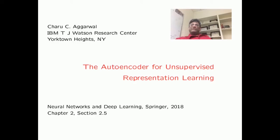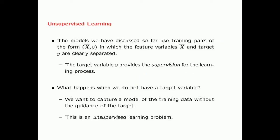In this video, we will introduce the autoencoder and its various uses for unsupervised representation learning. The models that we have discussed so far use training pairs of the form XY, in which the feature variables correspond to X and the target variable corresponds to Y. You have a clear separation between the feature variables and the target variable, so the target variable essentially provides supervision for the learning process.